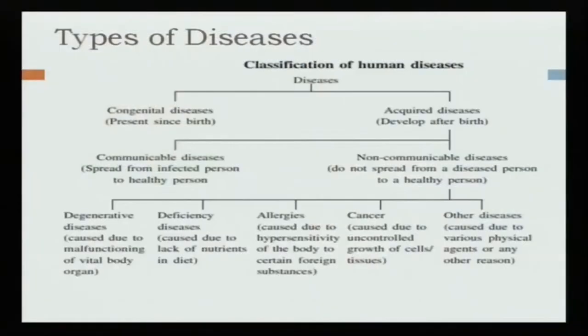We can divide non-communicable diseases into five types. Degenerative diseases involve malfunctioning of a vital body organ. Deficiency disease is related to nutritional deficiencies. These are very common categories under non-communicable diseases.